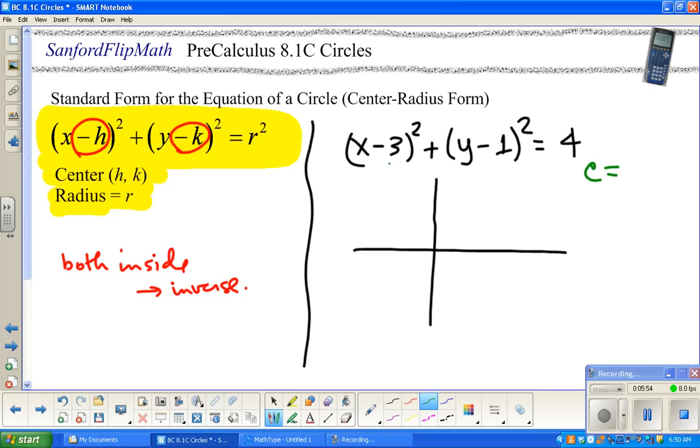For instance, let's say I have x minus 3 squared, plus y minus 1 squared, equals 4. And we're just going to graph this. So based on what we just said, the center should be at, well, the opposite of minus 3 would be positive 3. The opposite of minus 1 would be positive 1. So 1, 2, 3, 1. The center is here. Now, this is the tricky thing to remember. Remember, this is r squared. So r must be 2.